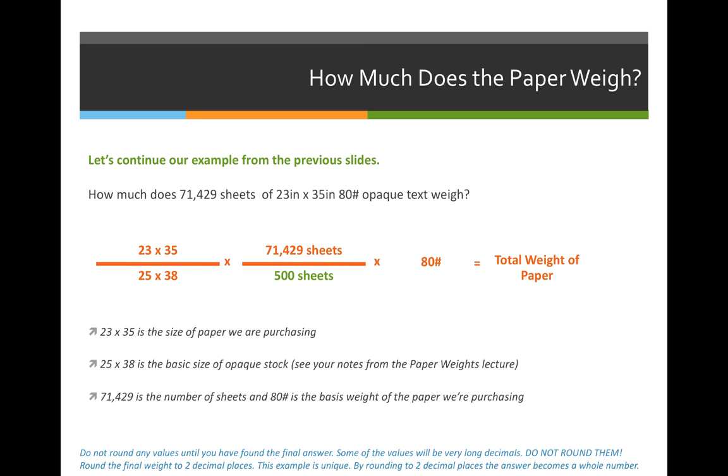Let's take a look at the example we've been working with. How much does 71,429 sheets of 23 by 35 inch paper weigh if I tell you that it's 80 pound, opaque text weight stock? The formula that we'll use to calculate this is the size of the paper, 23 by 35, divided by its basic size. It's text weight stock, so its basic size is 25 by 38. Then we'll take 71,429 sheets and divide that by 500, and then multiply the whole thing by 80 pounds.